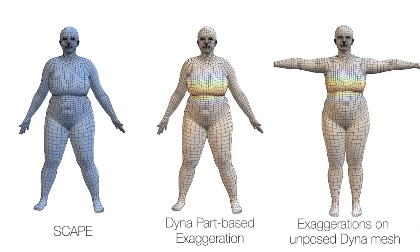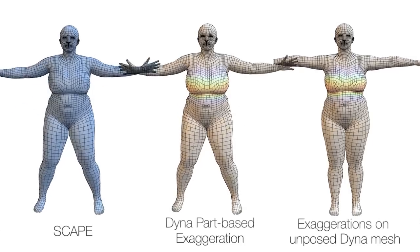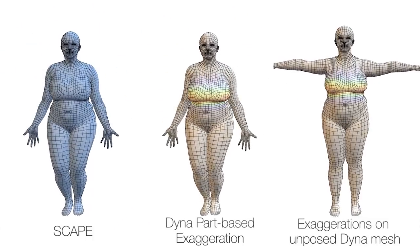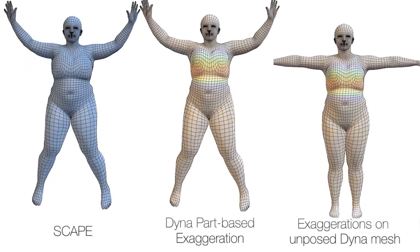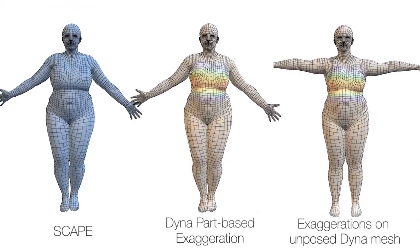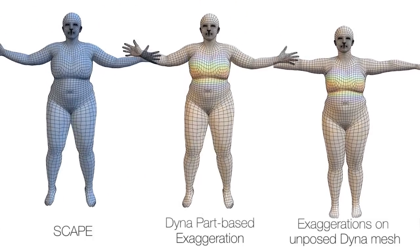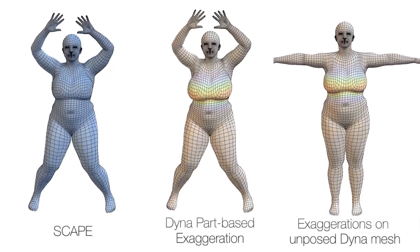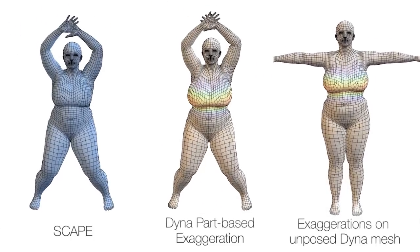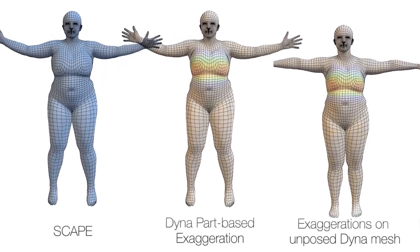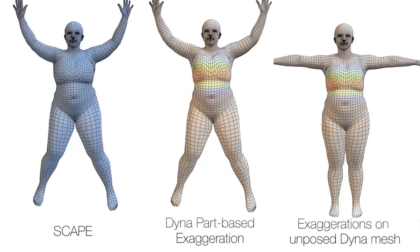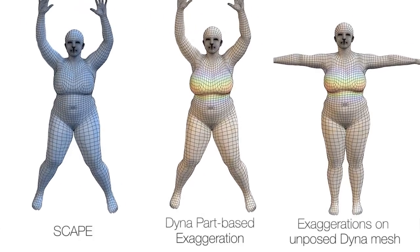Animators can also exaggerate or attenuate the soft tissue dynamics on different parts of the body. Here, we accentuate the motions of the chest and compare the result to SCAPE. The color coding corresponds to weights used to exaggerate the local deformations, where hot colors correspond to larger exaggerations.